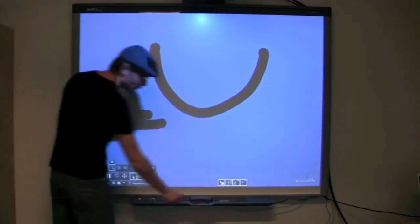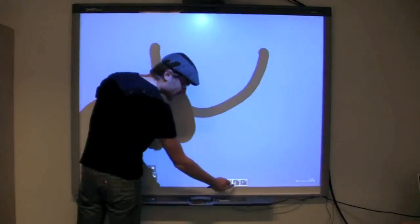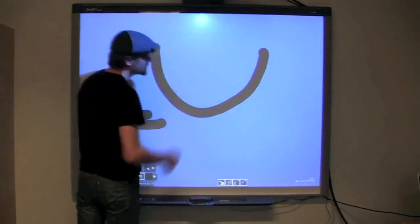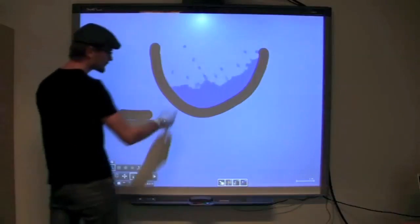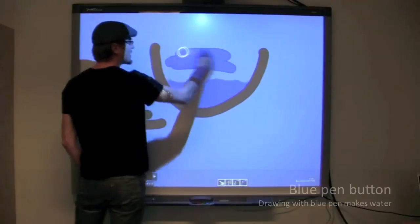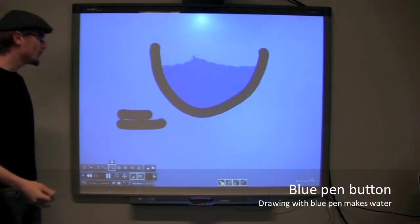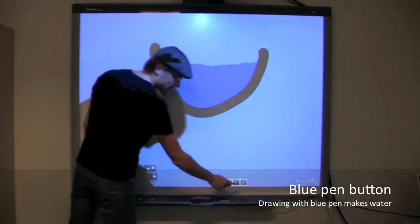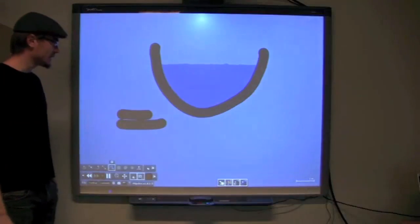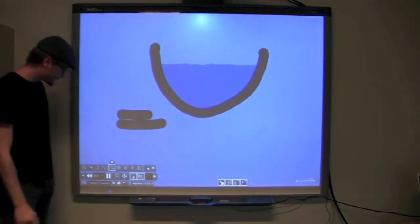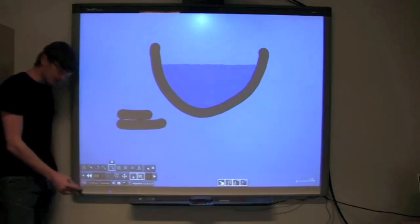And switch to blue. Now just as black means fixed, blue means water. So that's how easy to make water. Just draw something with the blue pen selected while that button is checked. Close the simulation now.